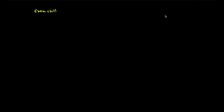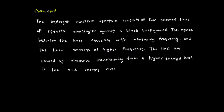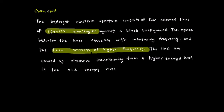A common exam question asks you to describe the hydrogen emission spectrum. The hydrogen emission spectrum consists of 4 coloured lines of specific wavelengths against a black or dark background. The space between the lines decreases with increasing frequency, and the lines converge at higher frequencies. The lines are caused by electrons transitioning from a higher energy level to the n=2 energy level. Importantly, 'specific wavelengths' tells us that the energy levels are discrete, meaning they have a fixed amount of energy.